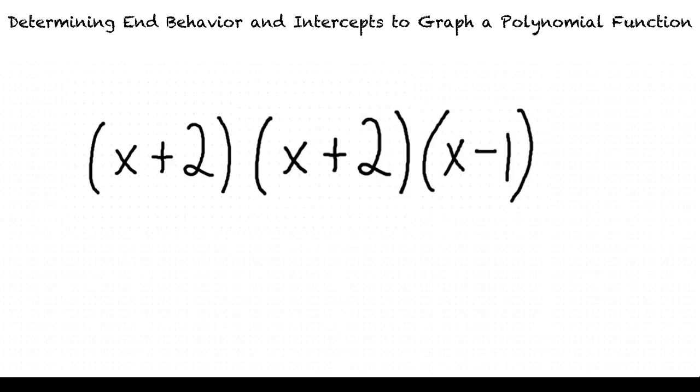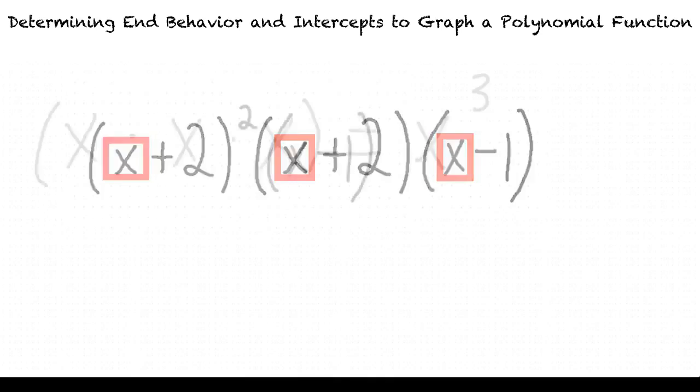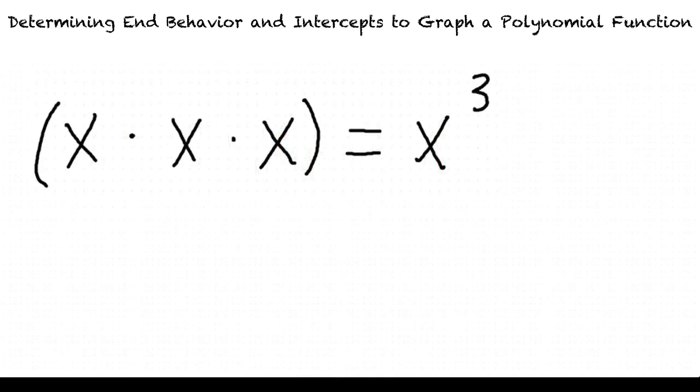This allows us to multiply the term of highest degree from each binomial to find the leading term of the polynomial function. x times x times x equals x³. And since none of the terms of highest degree have coefficients higher or lower than 1, the leading coefficient must be 1.